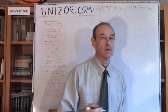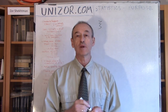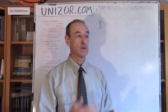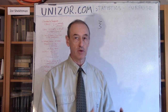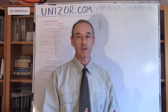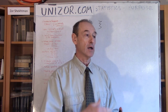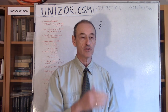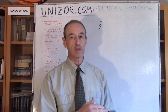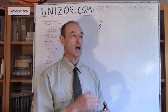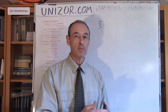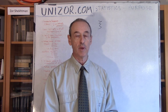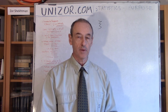We know everything about this random variable — we know its probabilistic characteristics, its distribution of probabilities. So we know the behavior of this variable. Based on these characteristics and probability distributions, we can actually say something about the values of this particular variable as experiments with this variable are carried out.